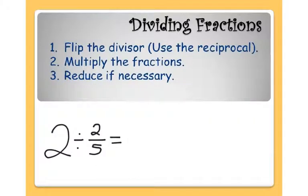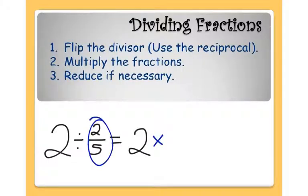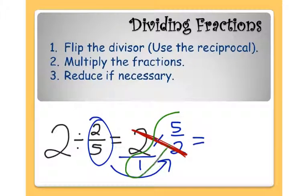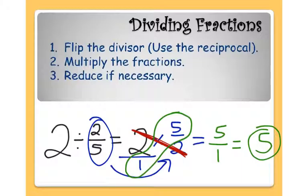Here's another example of a whole number divided by a fraction. So 2 divided by 2 fifths would be written as 2 times the reciprocal of 2 fifths, or the flipped version. I'm just going to flip that right over and it becomes 5 over 2. I turn my 2 into a fraction by putting a 1 in the denominator, and now I see that these 2's cancel each other out, leaving me 5 over 1 as my answer. And 5 over 1 in final form is 5. So 2 divided by 2 fifths is 5.